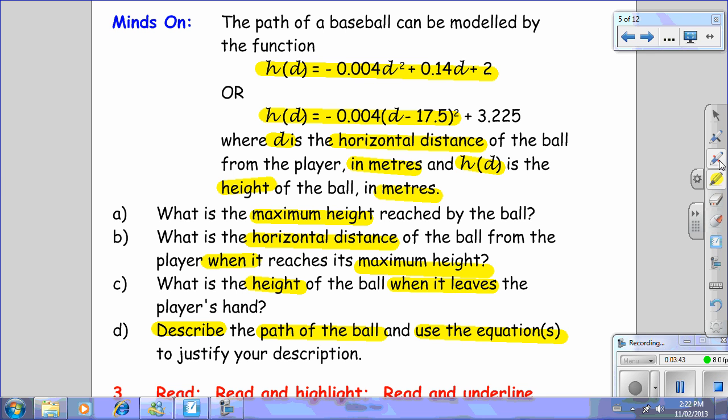Now, that's Step 2 we've highlighted. Step 3 wants us to read it all again and underline what we're looking for. So the path of a baseball can be modeled by the function h(d) = -0.04, blah, blah, blah. Or h(d) in vertex form, d is the horizontal distance, h is the height of the ball in meters.